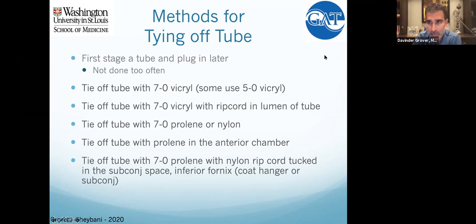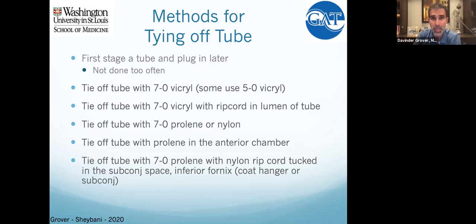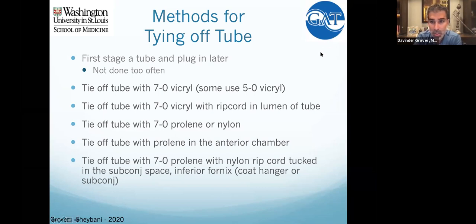The most common approach, as done in the TVT and PTVT trials, is tying it off with a 7-0 Vicryl. Some people like to tie it with a 5-0 — I was trained the classic way with 7-0 Vicryl. And then there are other techniques, like Catherine Friedel's question about using a Latina stitch or some type of ripcord in the lumen, which some people do.